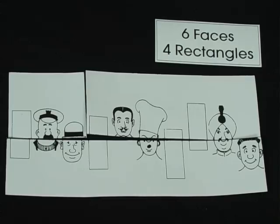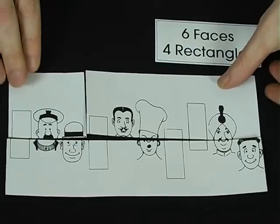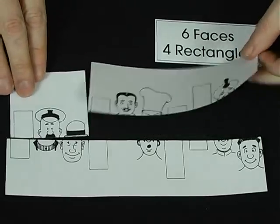I'm going to make one of these faces disappear right in front of your eyes. At the moment there are one, two, three, four, five, six faces and one, two, three, four rectangles. But all you need to do is just switch these two top pieces of paper.